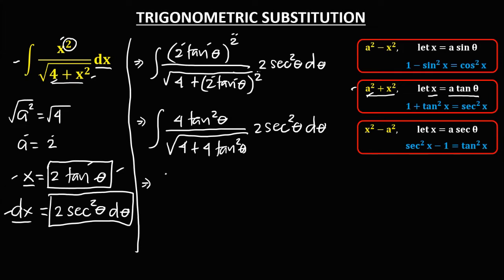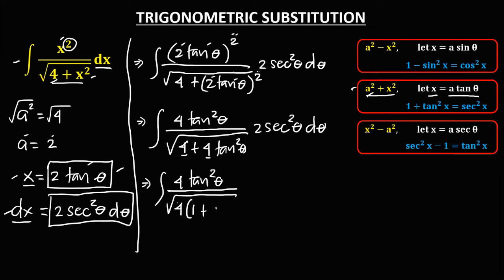We have the integral of 4 tangent squared theta over — since we can factor out 4, we put 4 outside, giving us 4 times the quantity 1 plus tangent squared theta — times 2 secant squared theta d theta.